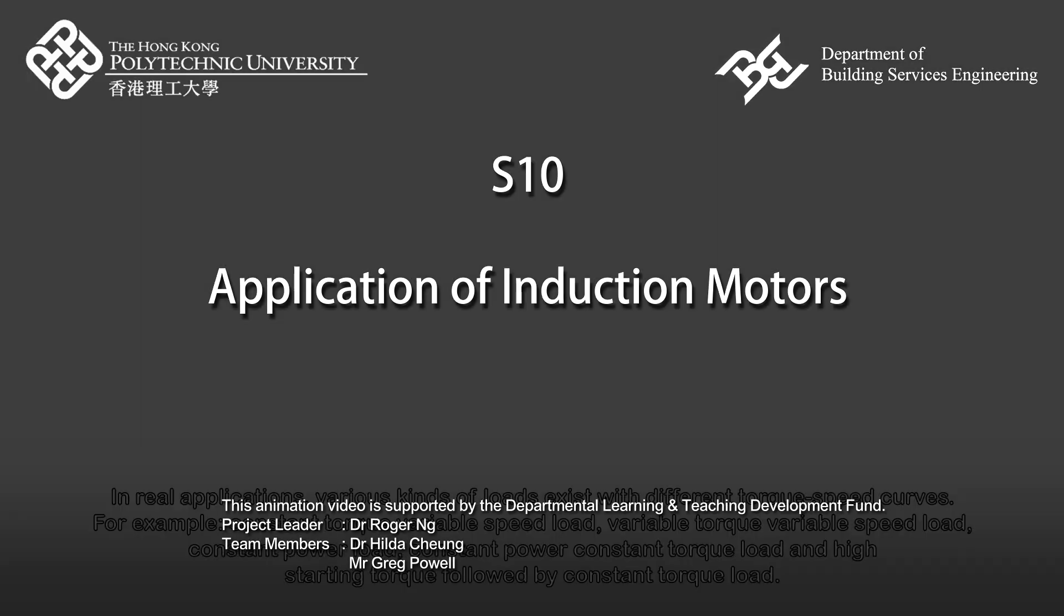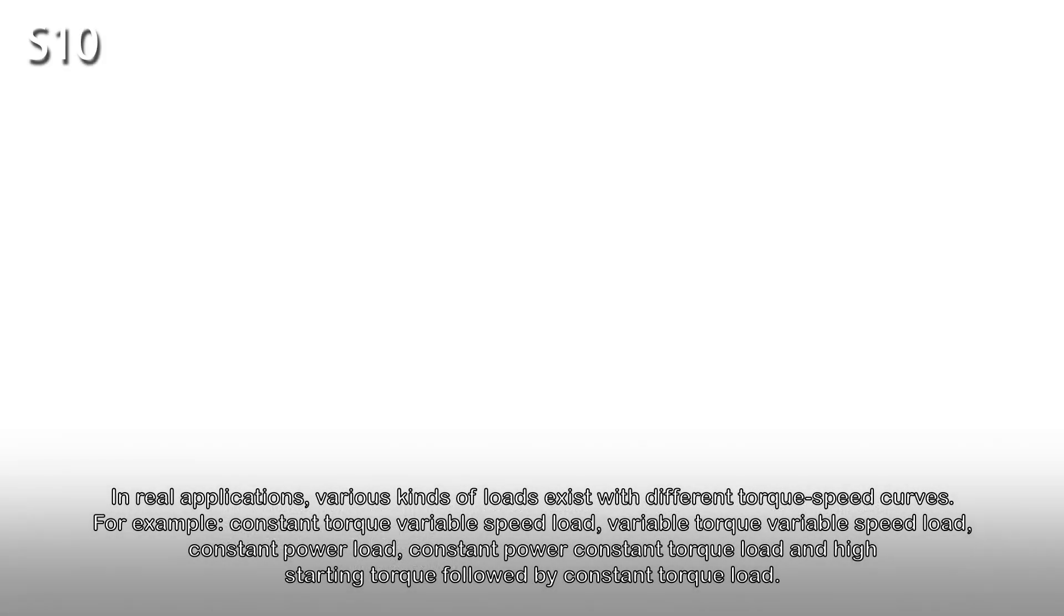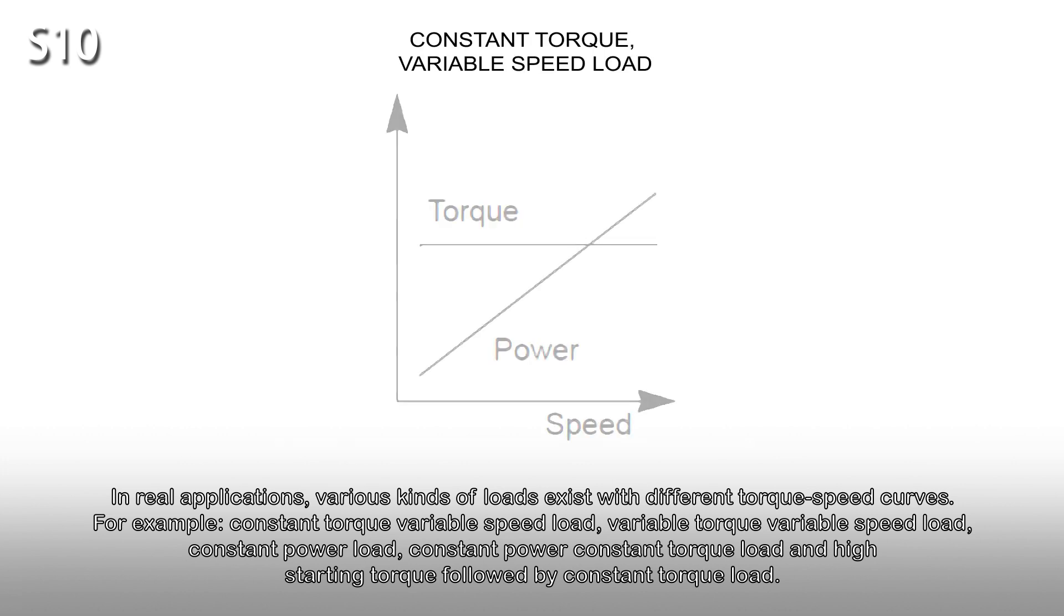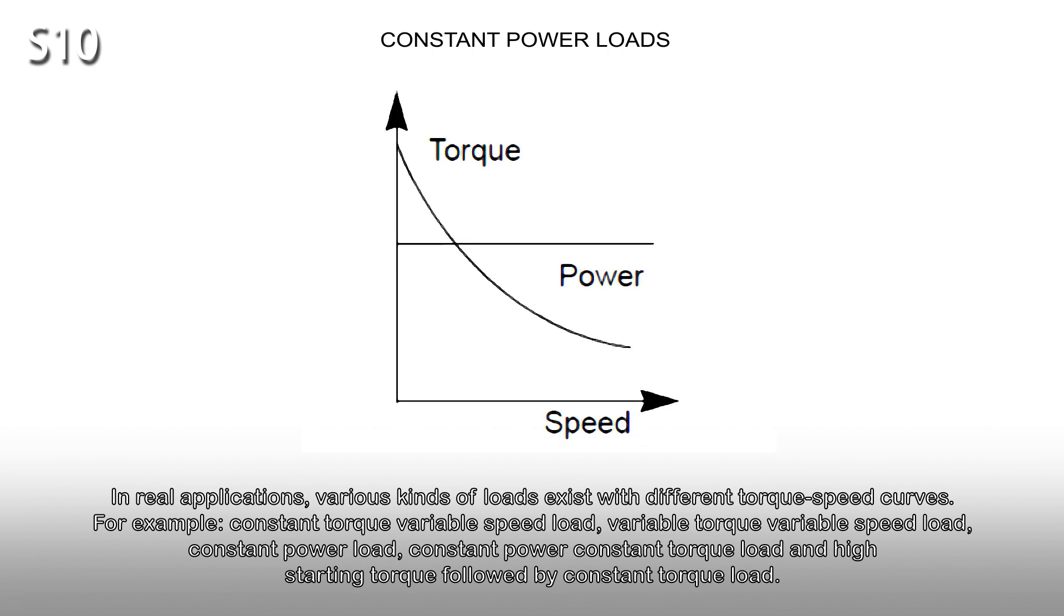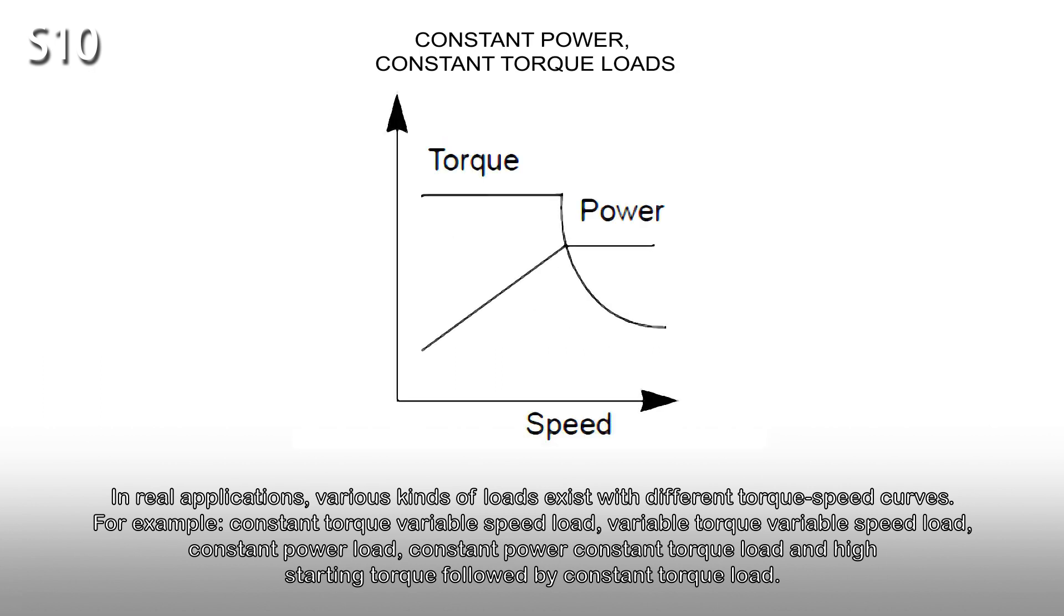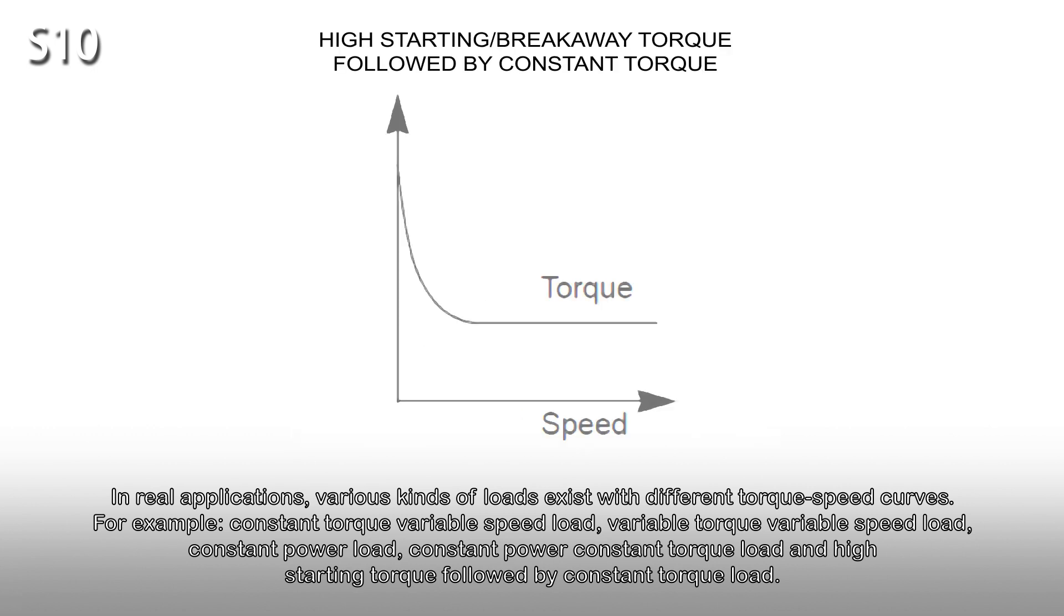In real applications, various kinds of loads exist with different torque speed curves. For example, constant torque variable speed load, variable torque variable speed load, constant power load, constant power constant torque load, and high starting torque, followed by constant torque load.